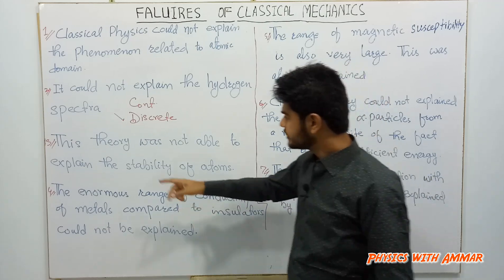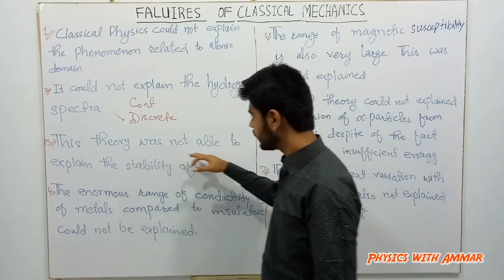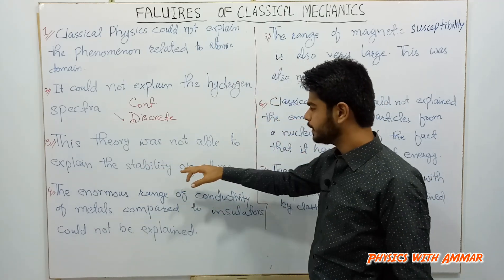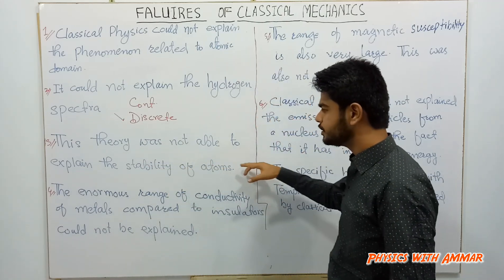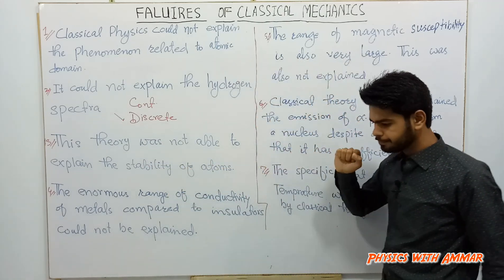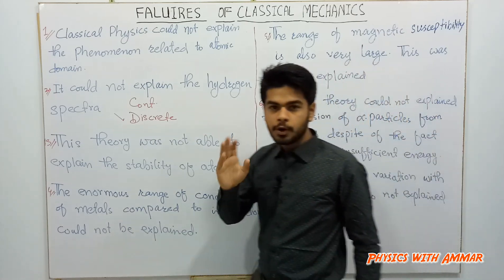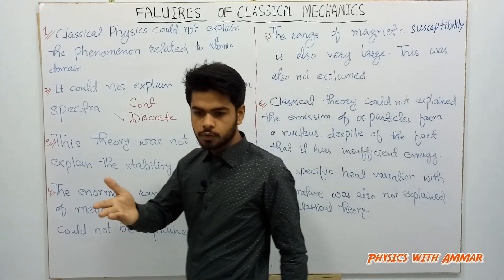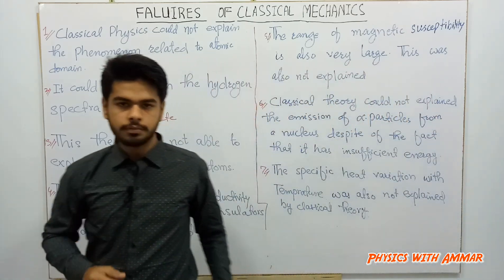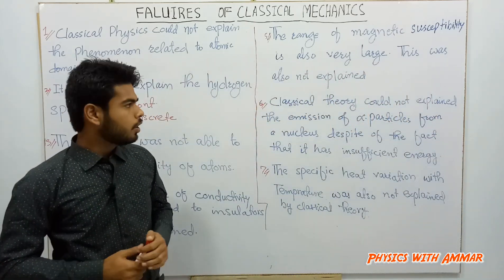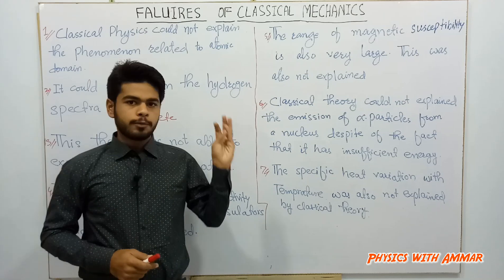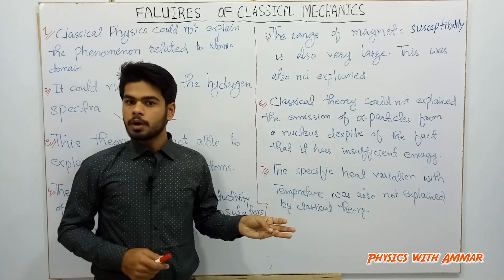The third failure: classical theory was not able to explain the stability of atoms. I have made videos on atomic models — first was J.J. Thomson's Plum Pudding Model, and then Rutherford's model which introduced the nucleus.